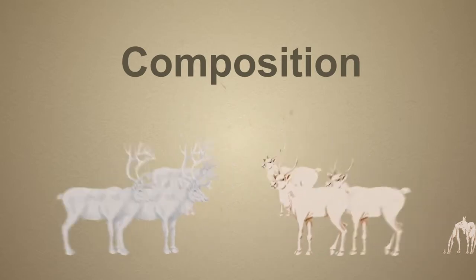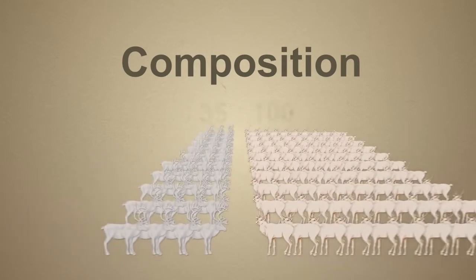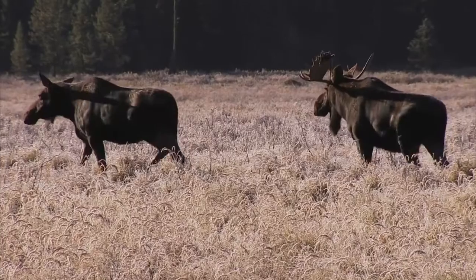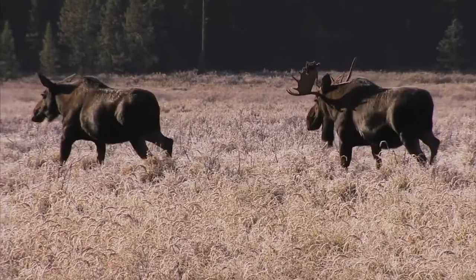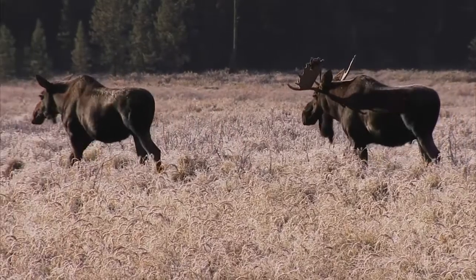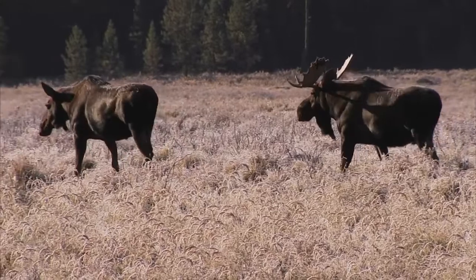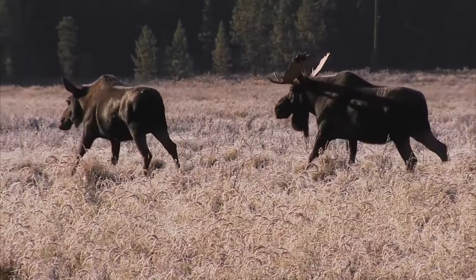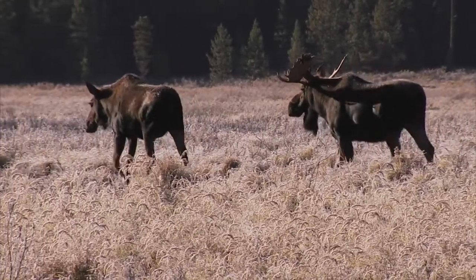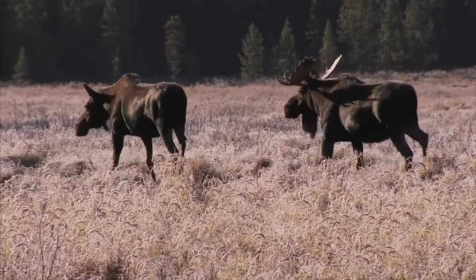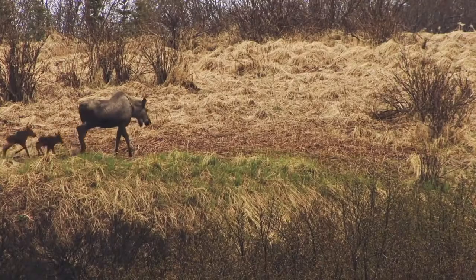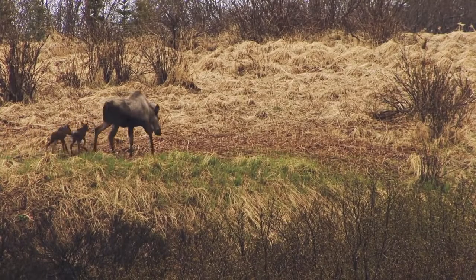For caribou, a ratio of at least 35 bulls to 100 cows is considered sustainable. Because bulls and cows are both part of this ratio we manage for, changes in survival to either group can alter the ratio. High rates of female mortality from hunting or other causes can have a negative impact on the sustainability of the population.